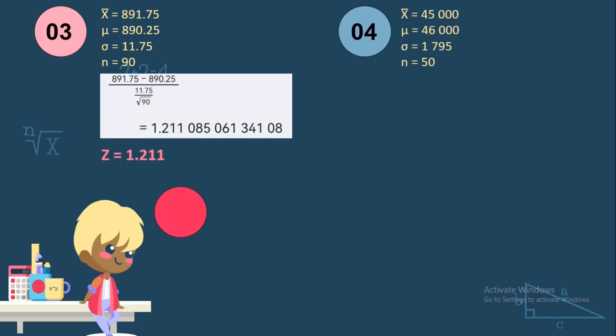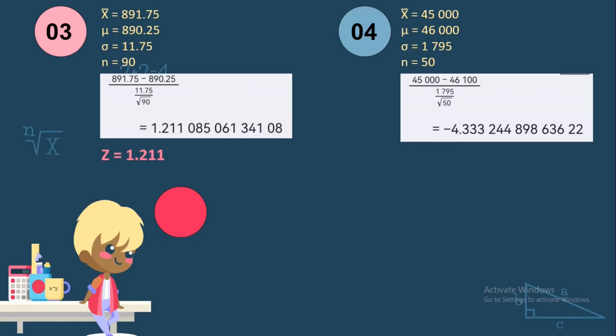Number 4: The sample mean is 45,000 while the population mean is 46,100. The population standard deviation is 1,795 while the sample size is 50. So: 45,000 minus 46,100 over 1,795 divided by the square root of 50. We get 4.333 and we just get the nearest three decimal places, so the Z value is negative 4.333.